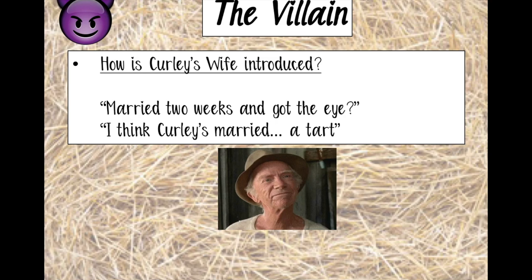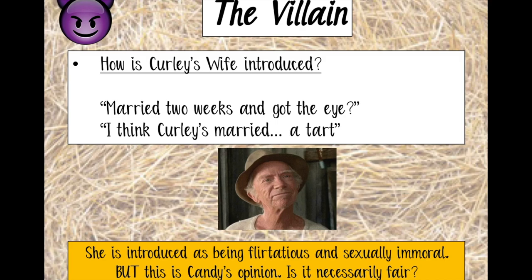In terms of being portrayed as the villain, again Candy has his own opinion. He tells George she's been married two weeks and she's 'got the eye,' and he thinks that Curly's married a tart. What does 'got the eye' mean? We can infer that she gives a certain look to the other men — the implication being she's trying to seduce them. And 'tart' is a derogatory term used for women seen to be sexually immoral. So she's introduced as flirtatious and sexually immoral. But this is Candy's opinion — is it fair? Because the text doesn't say that Curly's wife has the eye. Candy says it. So we have to question what John Steinbeck is really thinking.